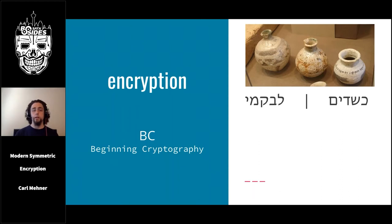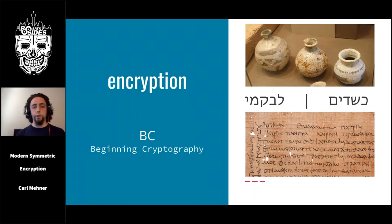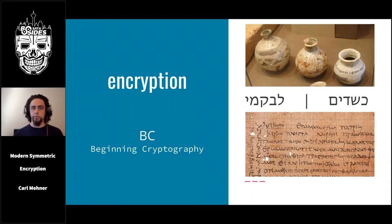Ancient Hebrew people also made use of encryption, using a substitution cipher to encode the names of their enemies in parts of the Bible as early as 600 BC. By the time the Roman Empire took over, Julius Caesar improved the speed of encryption algorithms by taking each letter in a message and shifting it forward three places.